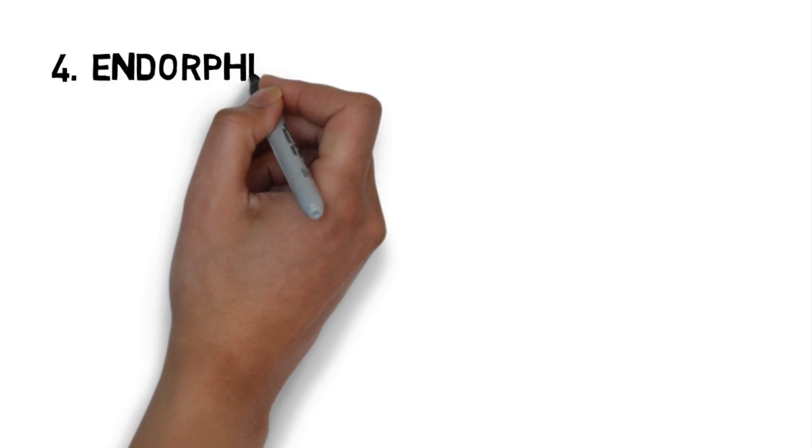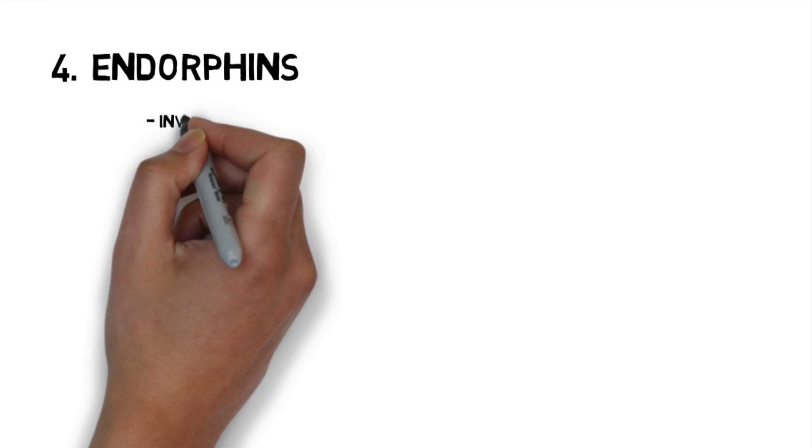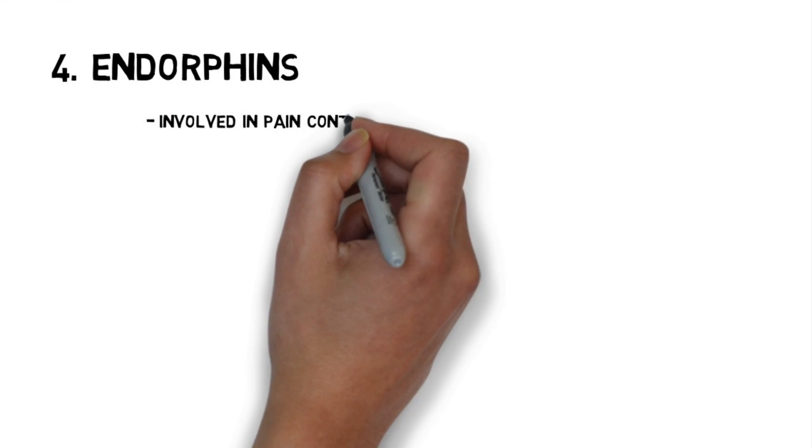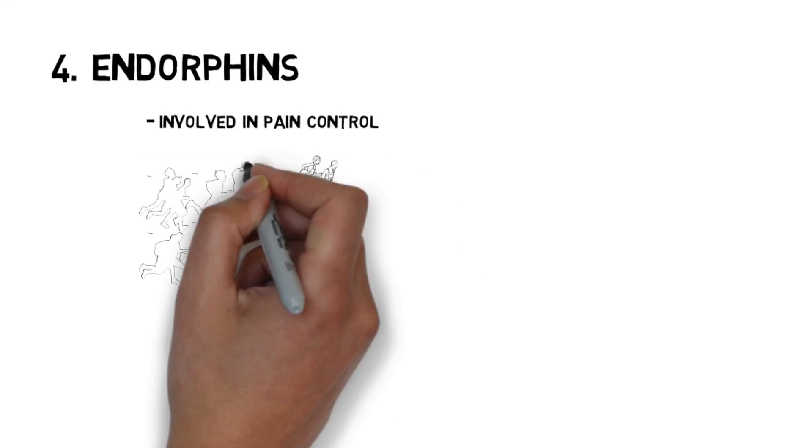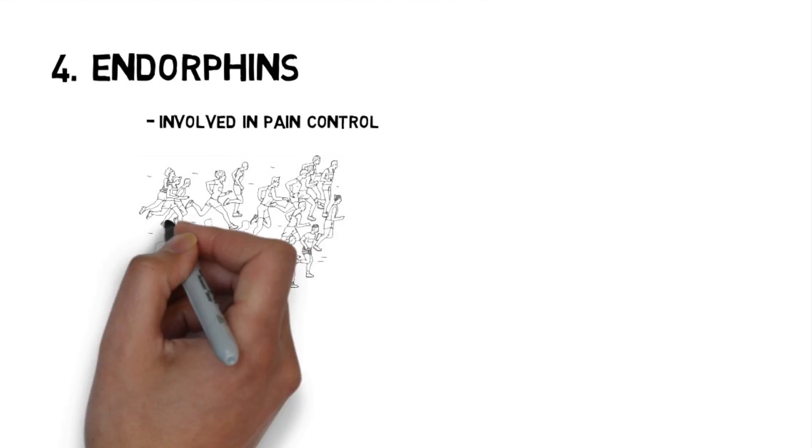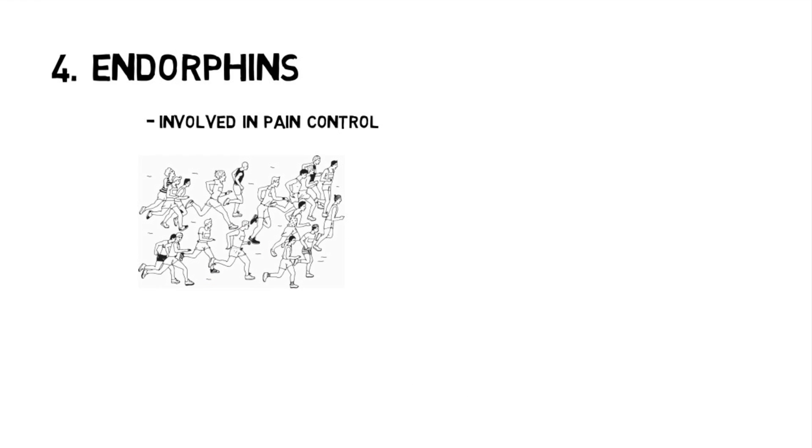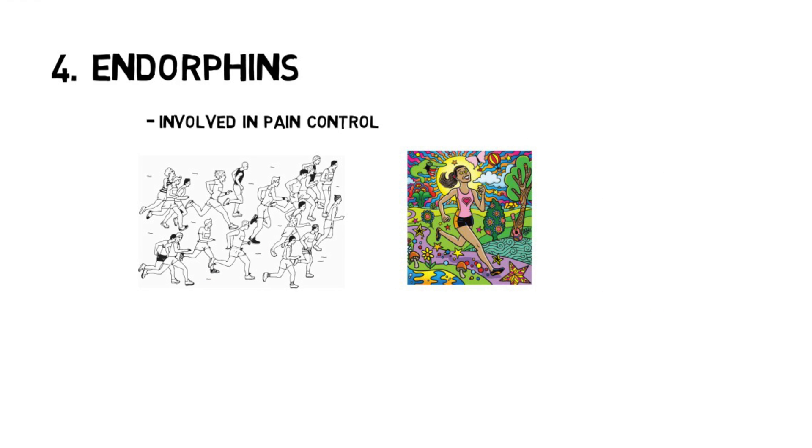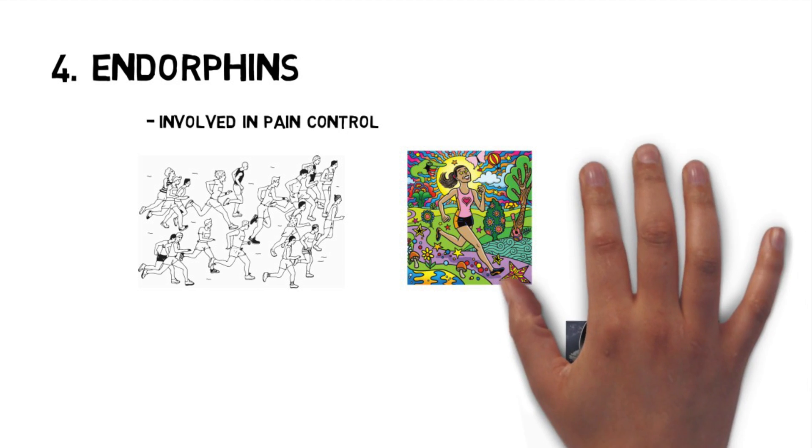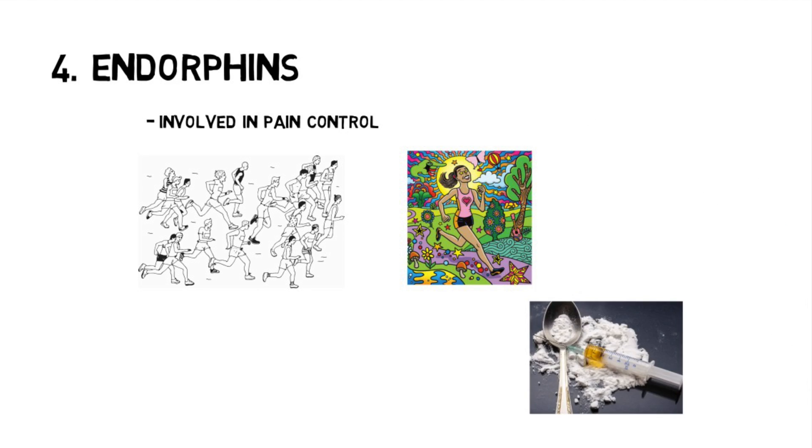One of my favorite neurotransmitters is called endorphins. Endorphins are really dealing with pain control. For those of you who spend a lot of time exercising, in particular those of you who run long distances, your body will release endorphins in response to the pain. I believe they call that runner's high. I don't really know anything about that because running just sucks. Opiate drugs like heroin tend to mimic endorphin production in our brain.